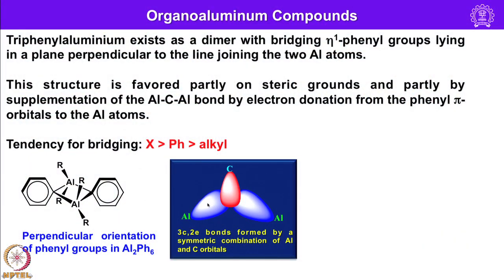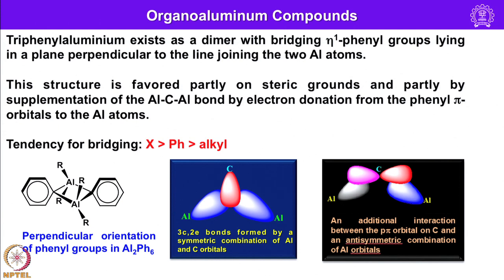One aluminum has one electron and the other has none, similar to diborane. These interact with the sp2 carbon of phenyl. The p orbitals perpendicular to the Al–C–Al plane interact with aluminum orbitals: one sp3 with a pair and another antibonding one. An additional interaction between the p-pi orbital on carbon and an antisymmetric combination of aluminum orbitals strengthens the Al–C–Al bond, making phenyl-bridged dimers slightly more stable than analogous alkyl compounds.